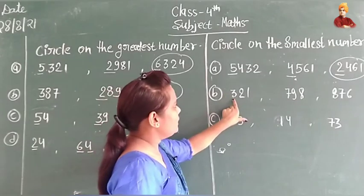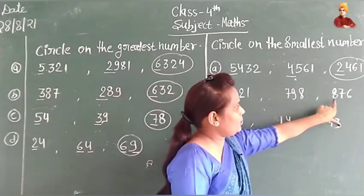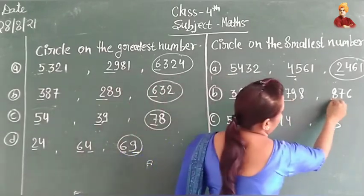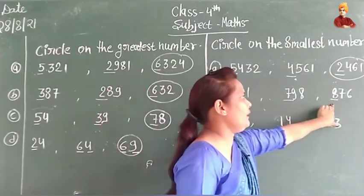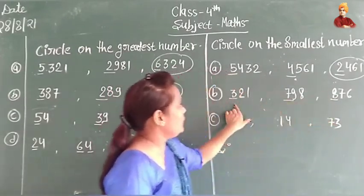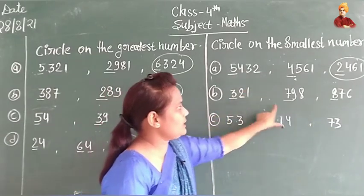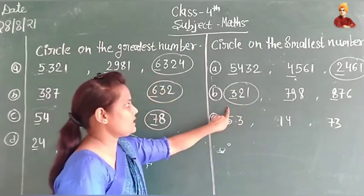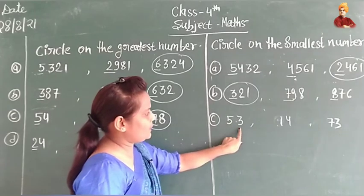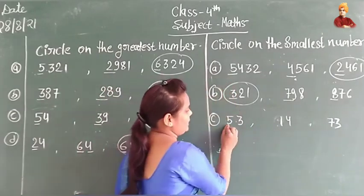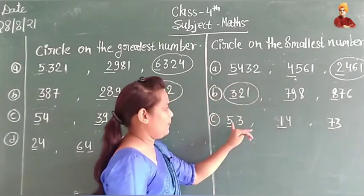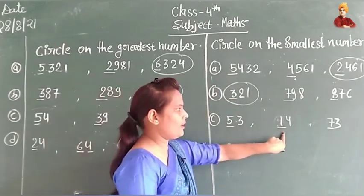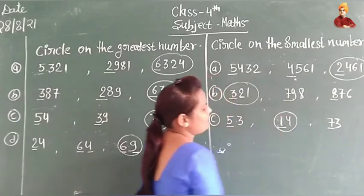The second example has numbers 321, 798, and 876. Looking at the left side first digits: 3, 7, and 8. We find the smallest number among these. The smallest first digit is 3, so 321 is the smallest number.